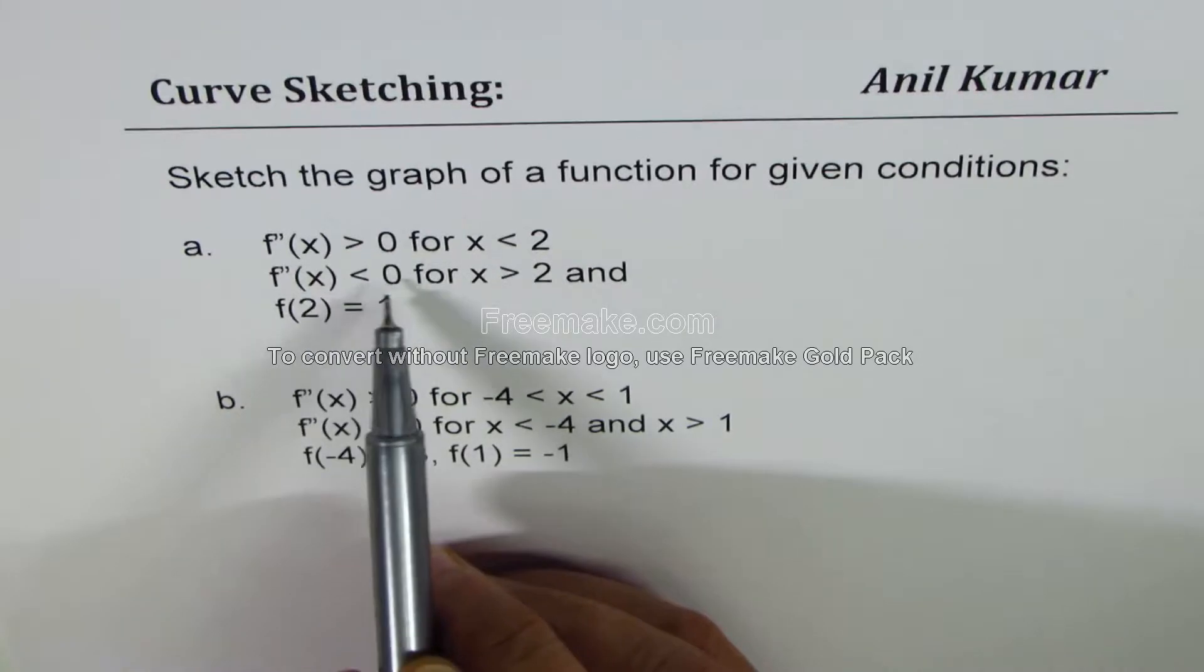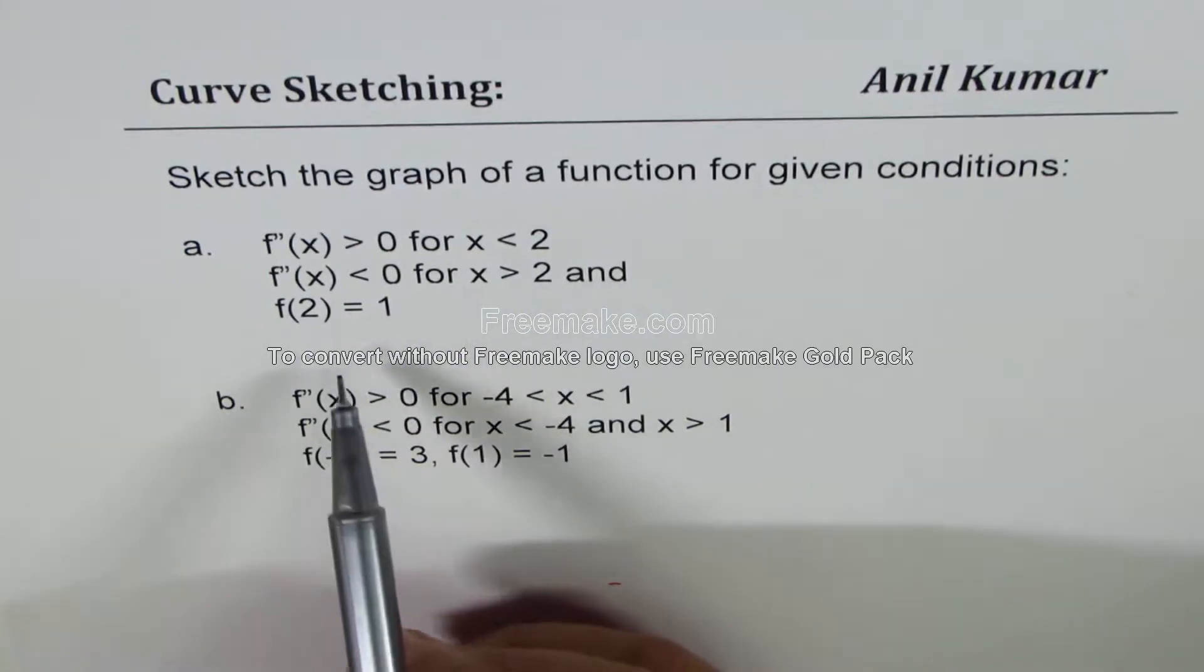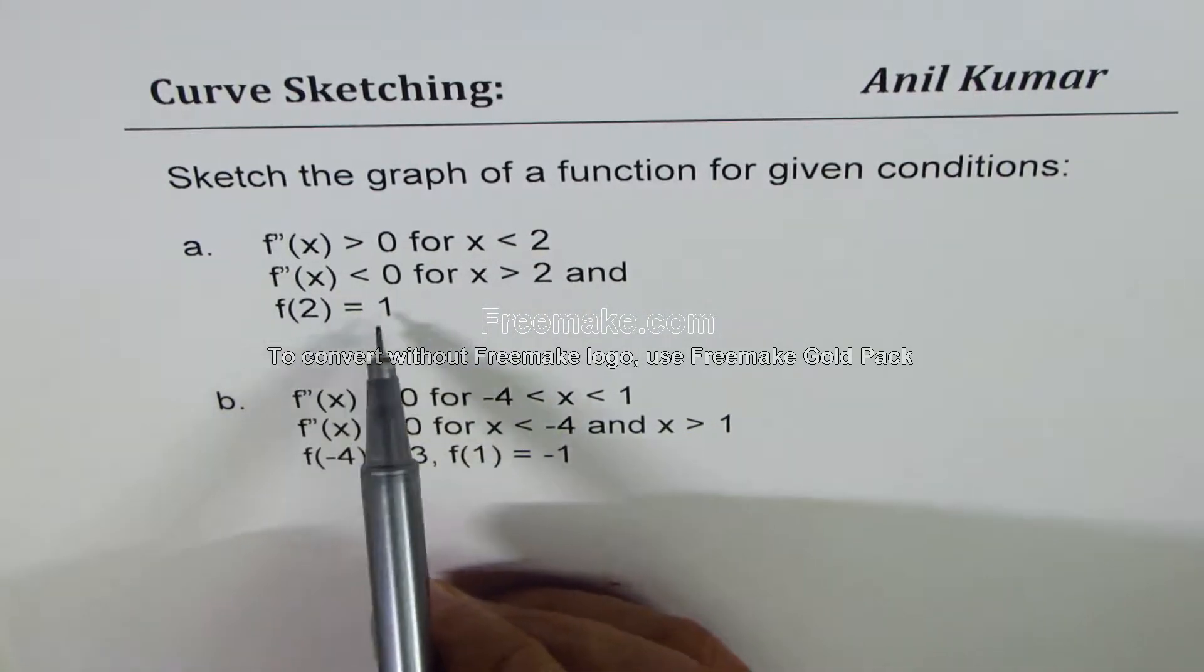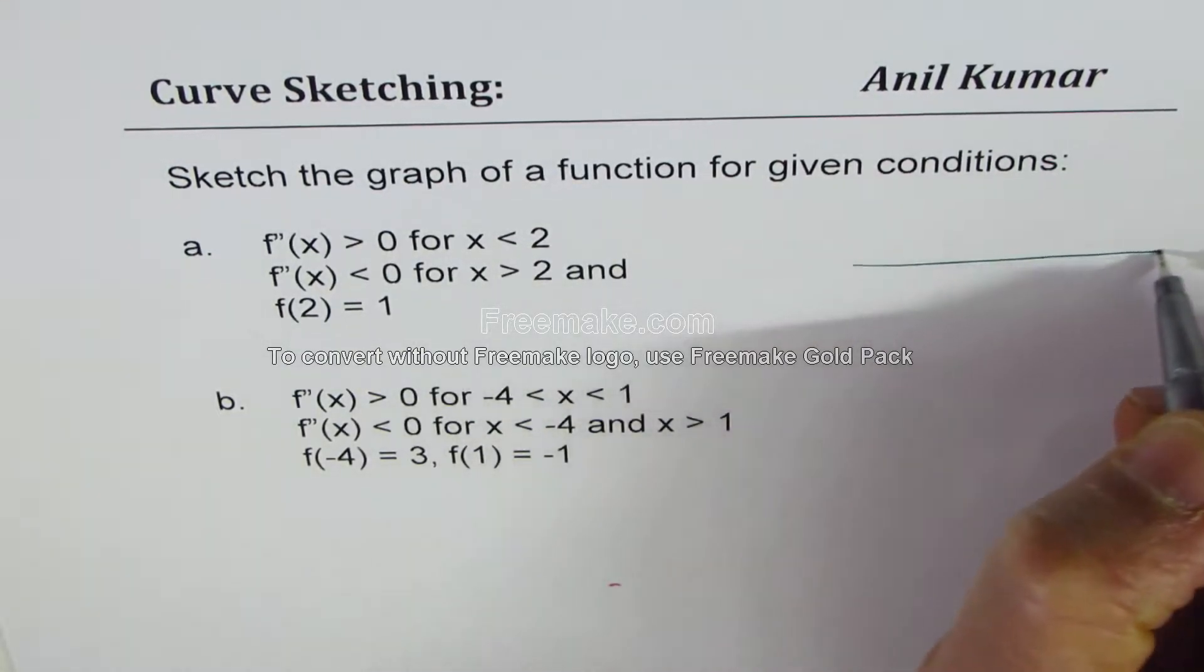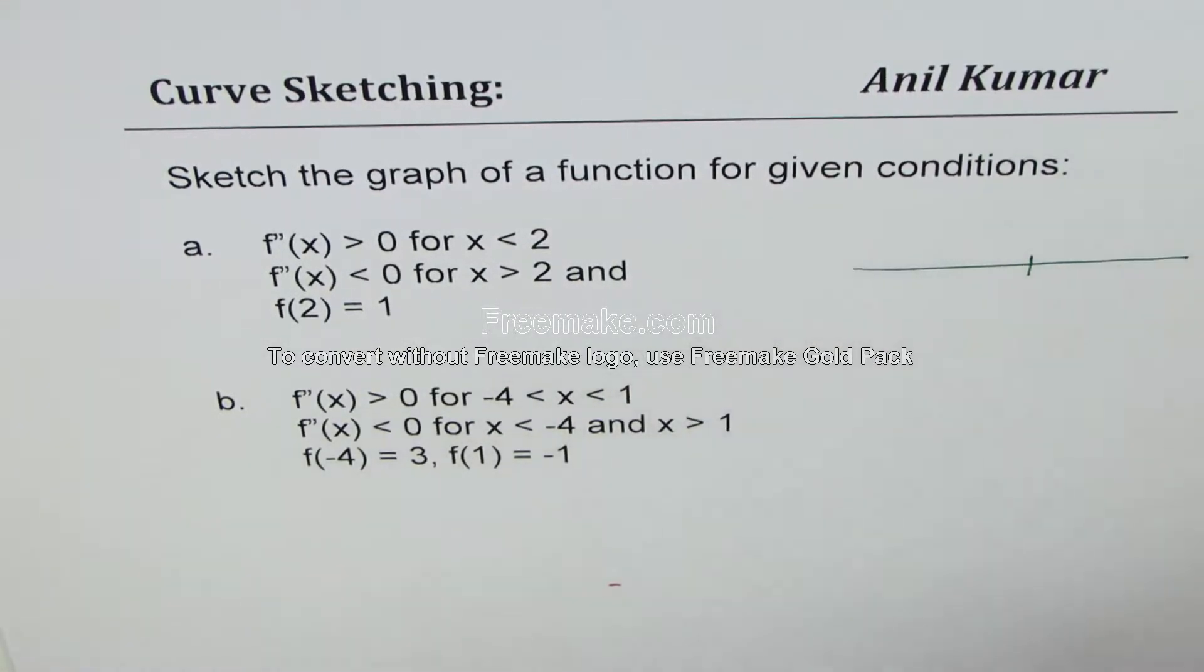f''(x) < 0 for x > 2 and the value of the function at 2 is 1. So let's analyze the situation and then we'll immediately do it.